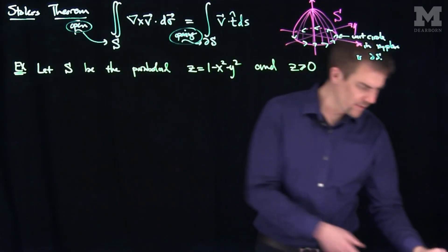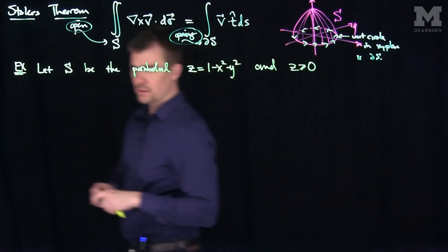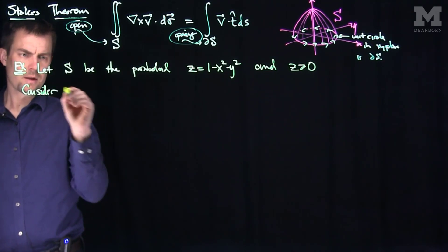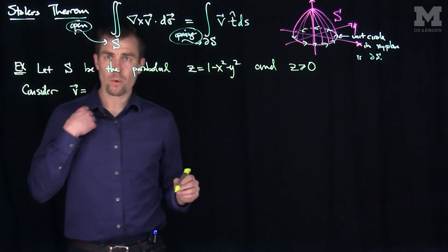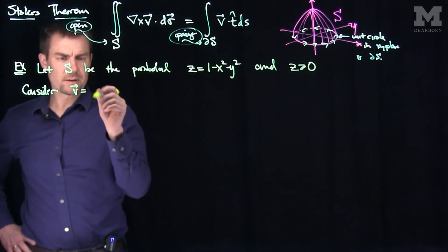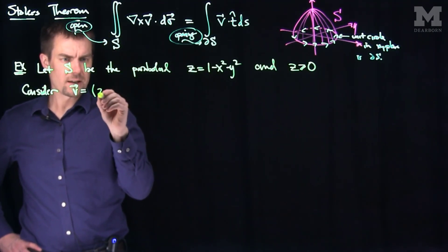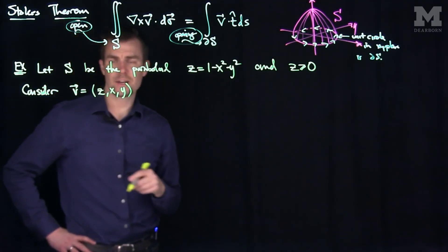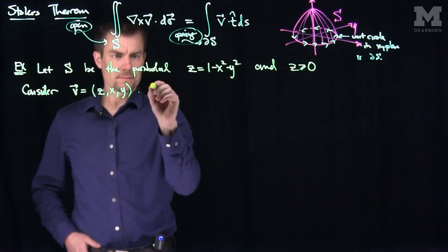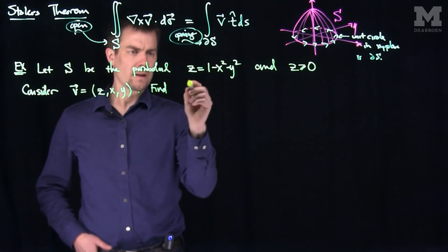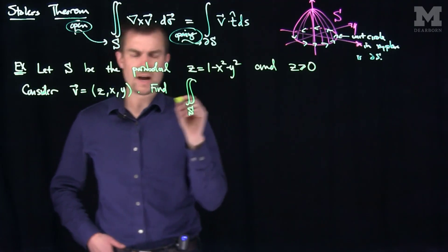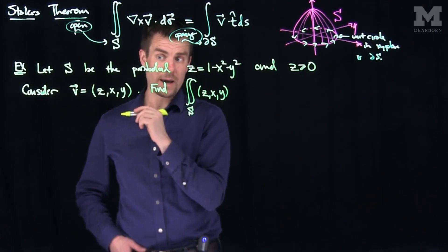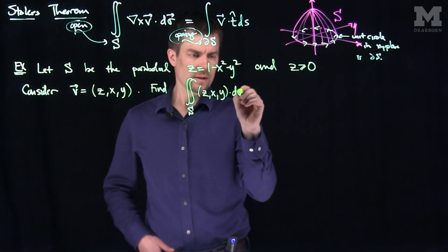Now let's consider the vector field V. V is going to be the vector field with components z, x, and y. We want to find the surface integral over S of (z, x, y) dot d-sigma-hat.